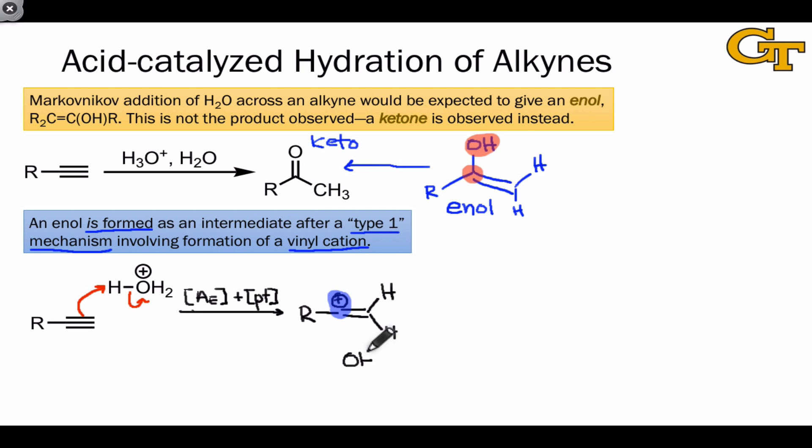The first step also generated water, which in the second step of the mechanism coordinates to the cationic carbon in an A sub N or nucleophile association elementary step. Notice that the direction of approach of the water here is irrelevant to the outcome of the reaction, since the alkene has a CH2 group on the other end, meaning there's no cis-trans issue here.